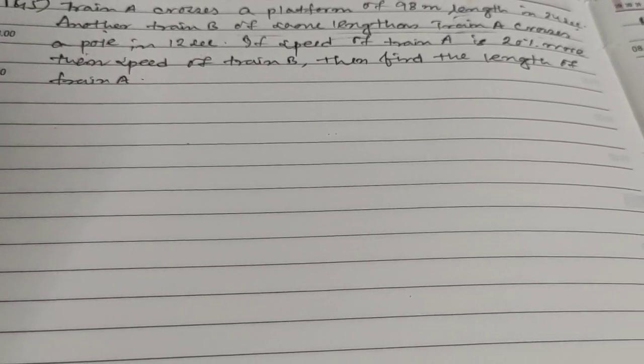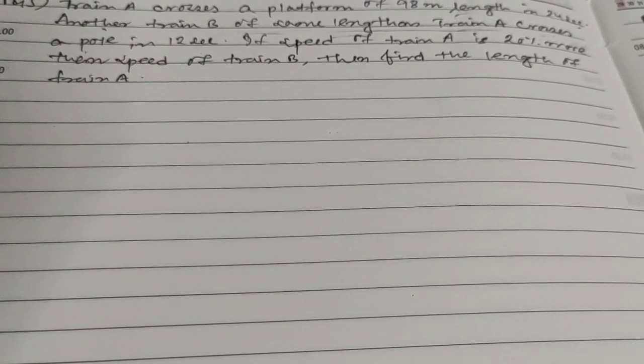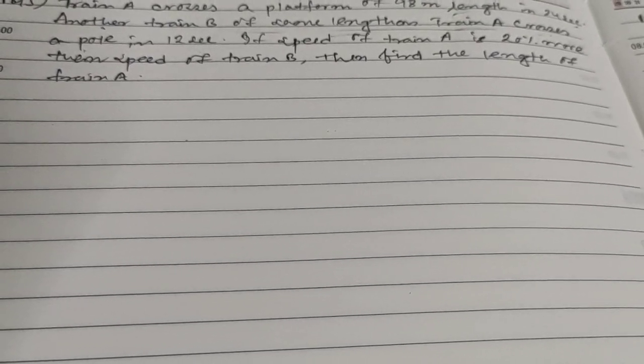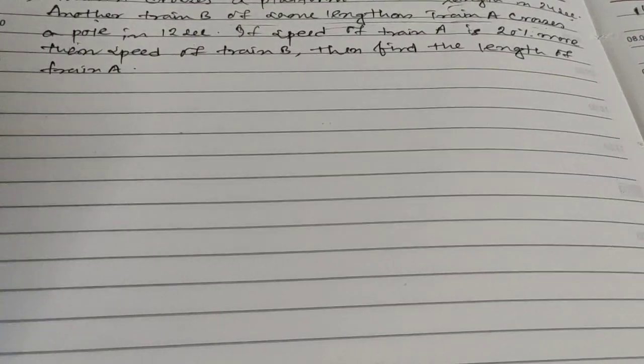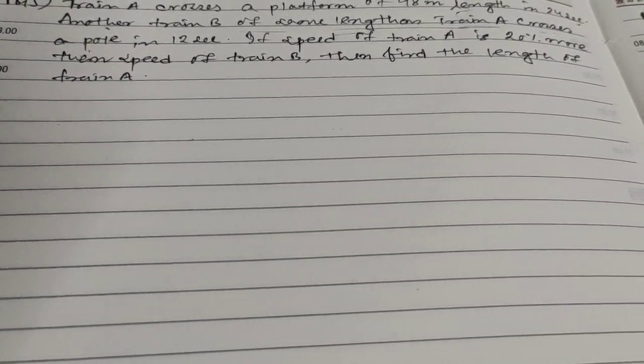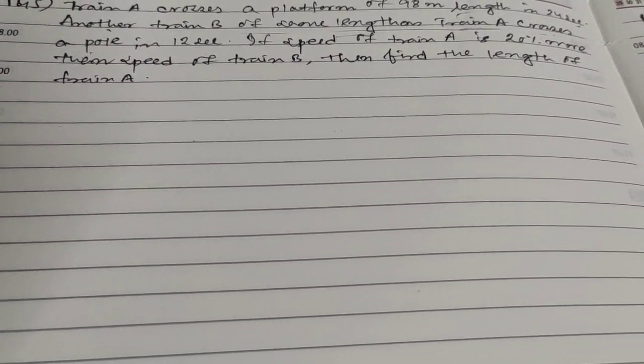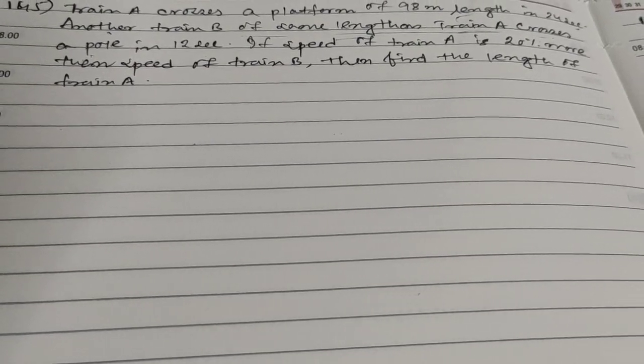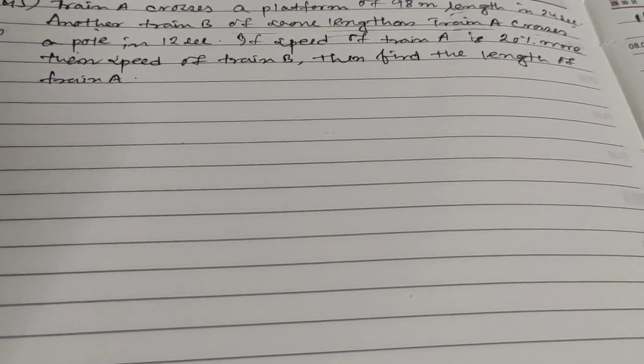Hi friends and students, this is question number 145. The question is: Train A crosses a platform of 98 meter length in 24 seconds. Another train B of same length as train A crosses a pole in 12 seconds. If speed of train A is 20 percent more than speed of train B, then find the length of train A.